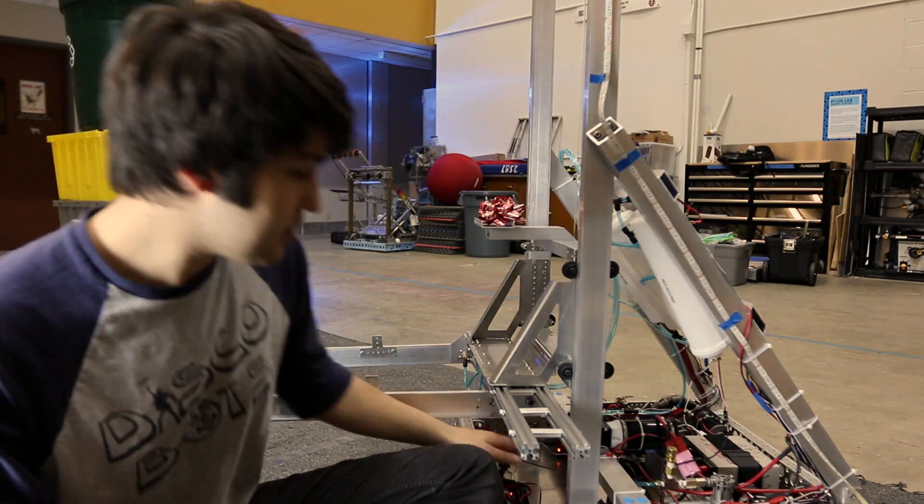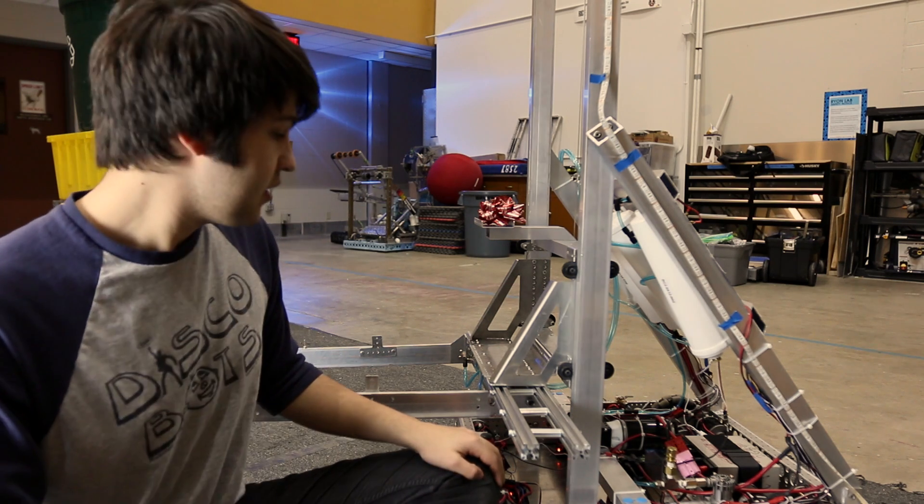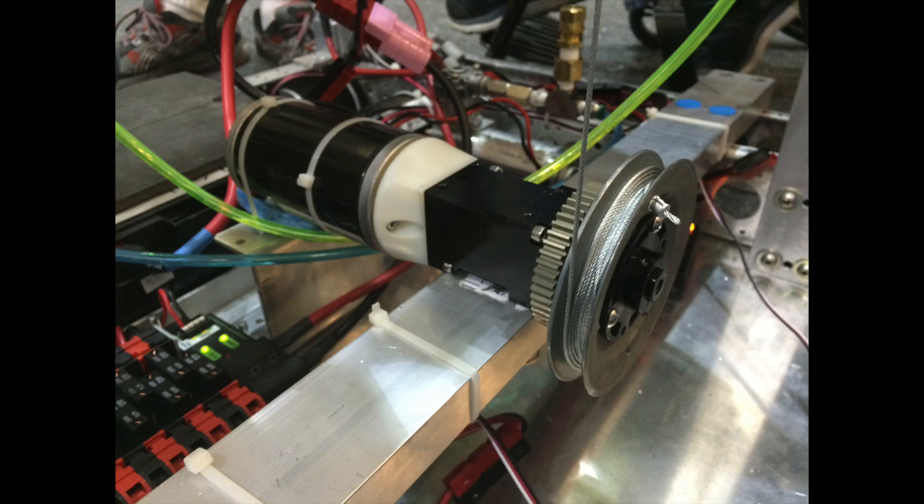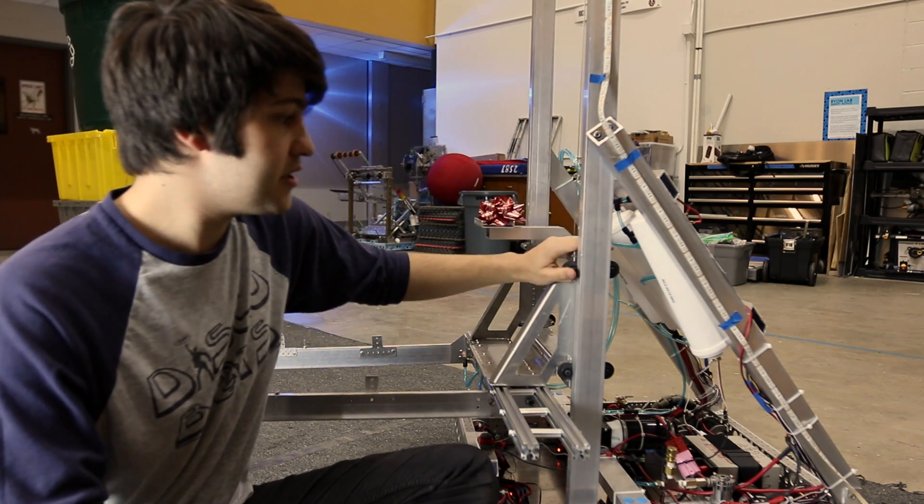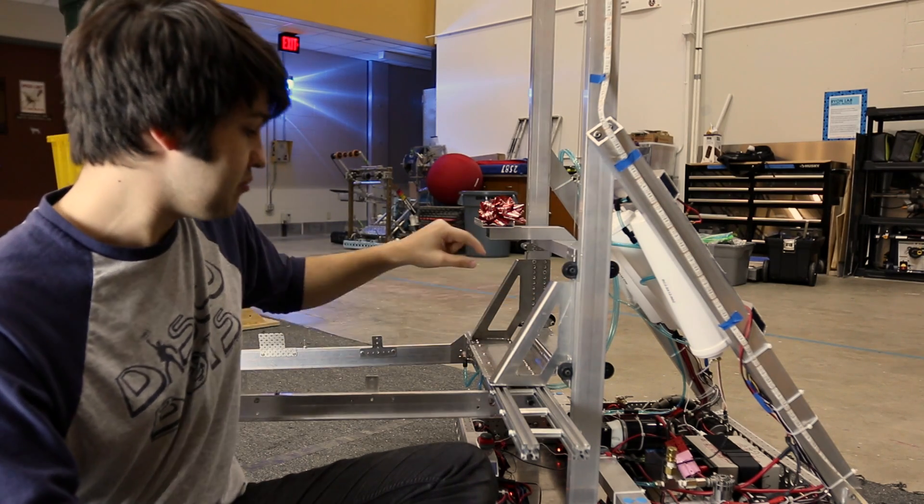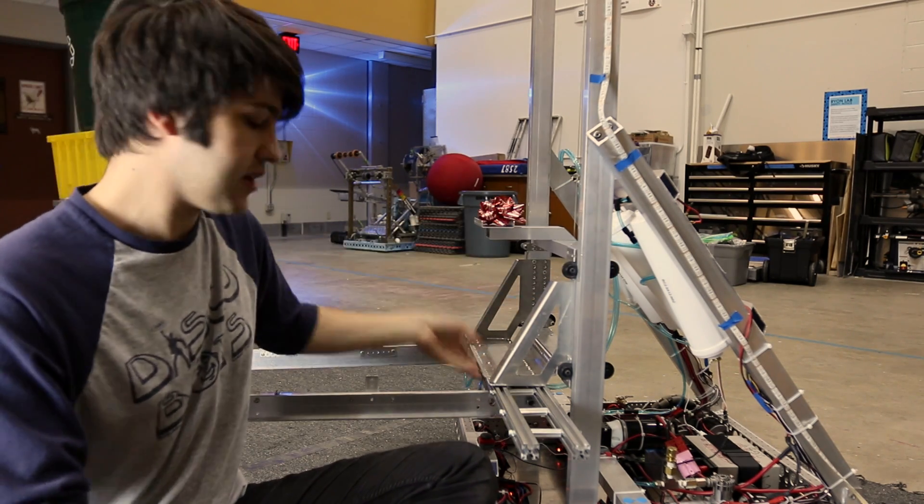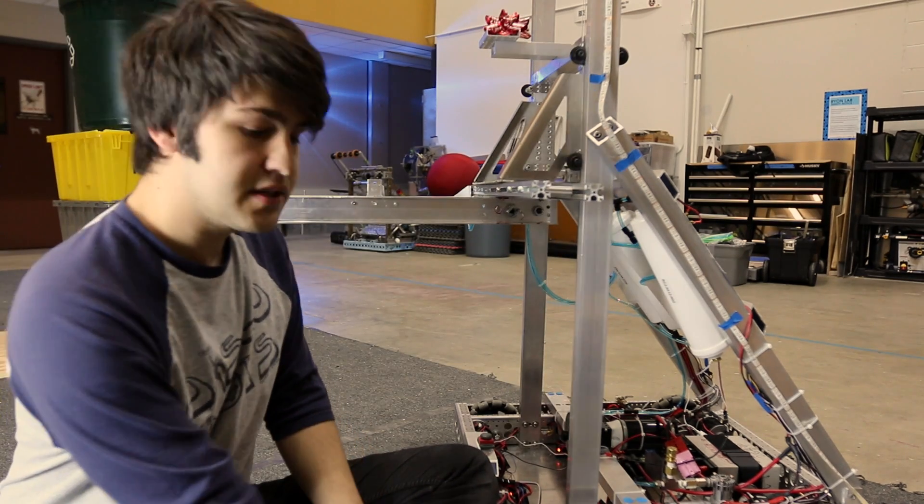Our VersaPlanetary down here turns a spool, and the spool pulls down this cable which goes up and around a pulley and back down and is connected to the carriage. So when you pull down on the cable, it pulls the carriage up like so. Our lift came together really well - it works really smoothly. I'm really happy with it.